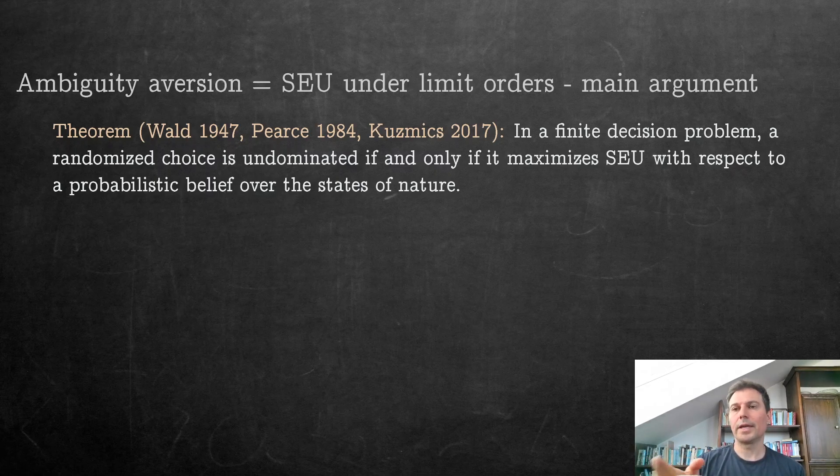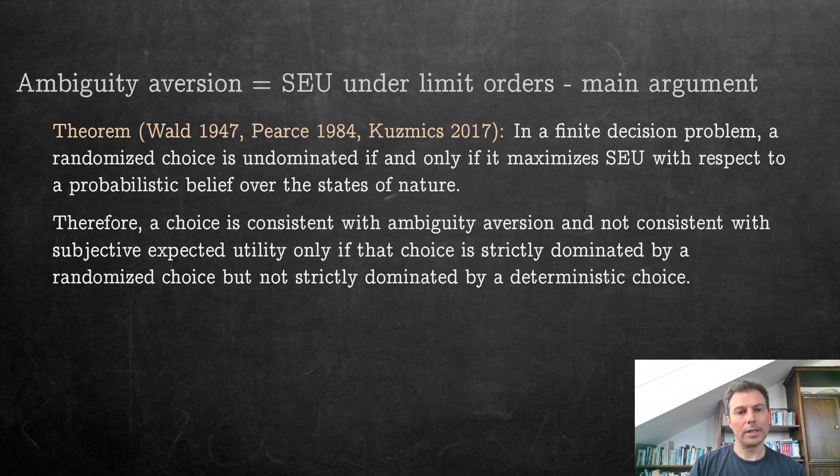The important thing is that we're in the world of random choices. If you can choose randomly, in some sense, you will always have to choose, if you want to choose undominatedly, things as if you are a Bayesian, as if you are maximizing subjective expected utility. So the key is this randomized choice. Our view is that ambiguity aversion basically means that you do not choose randomly, or you evaluate random choices strangely or differently. And so the takeaway is that a choice is then consistent with ambiguity aversion, and not at the same time consistent with subjective expected utility, only if that choice is strictly dominated by a randomized choice but not strictly dominated by a deterministic choice.